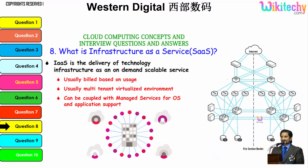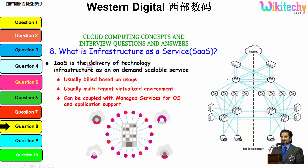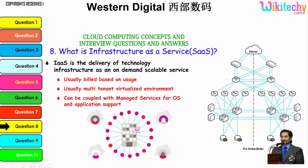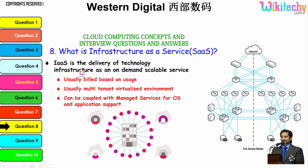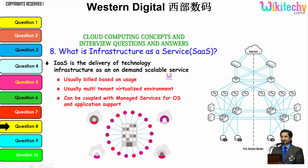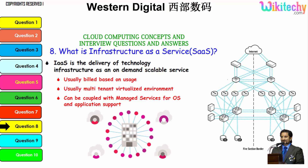Now let's talk about Infrastructure as a Service. You will be allocated with your server, and whatever OS you want you can put it, and whatever software you want you can put it. IaaS is a delivery of technology infrastructure as an on-demand, scalable service, built based on usage, and is usually multi-tenant and virtualized.